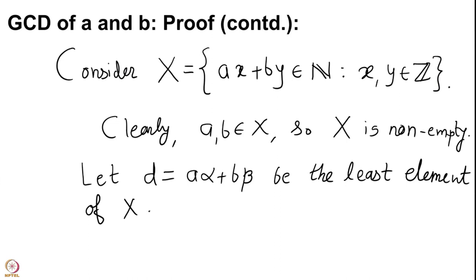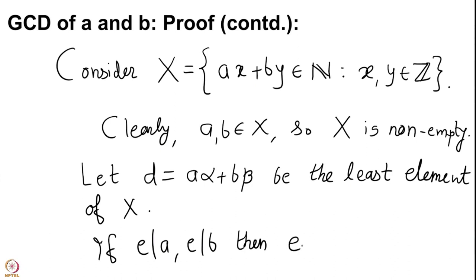We have found the candidate d, and it is of the form a·α plus b·β. Now we have to prove it is our GCD. Clearly, if e divides a and e divides b, then e is going to divide a·α plus b·β, which equals d. So e will divide d. So the second condition is satisfied. The only thing left to prove now is that d is a divisor of a and b — we have not yet proved that d divides a or d divides b.